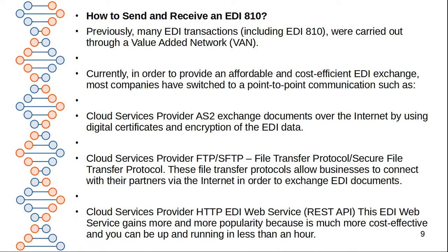It is very important to know how to send and receive an EDI 810 file, also called the invoice file. Previously, many EDI transactions including the 810 were carried out through the VAN, or value-added network. We can send information at the EDI protocol. Currently, in order to provide affordable and cost-efficient EDI exchange, most companies have switched to point-to-point communication such as cloud services providing AS2, which is called Applicability Statement 2. AS2 exchanges documents over the internet using digital certificates.